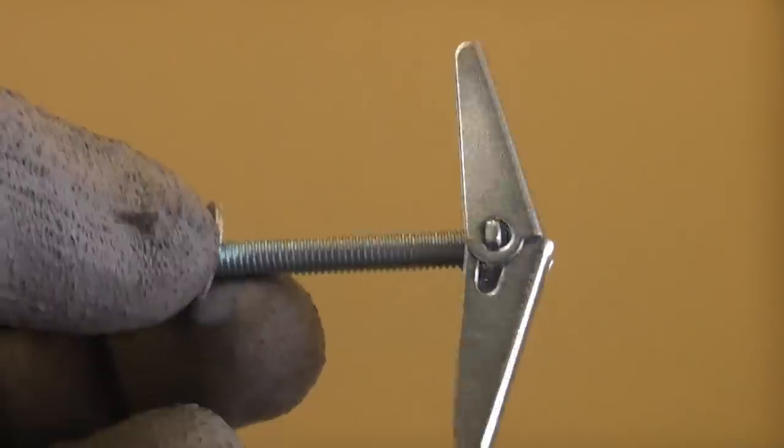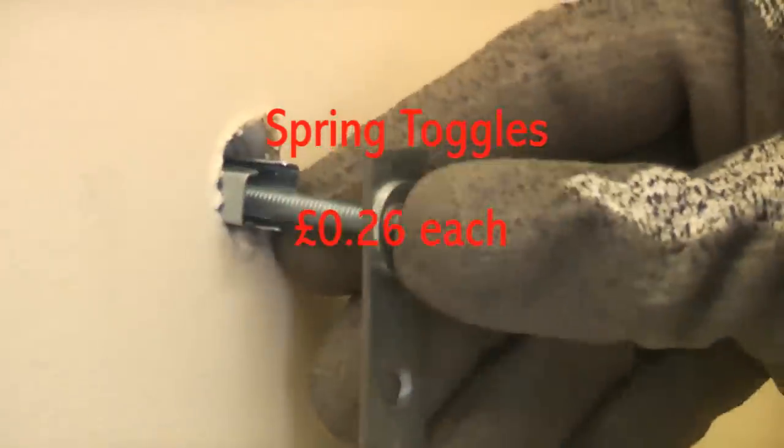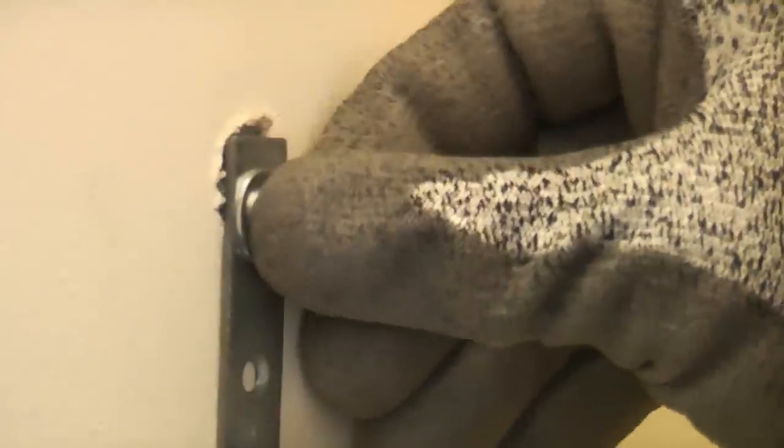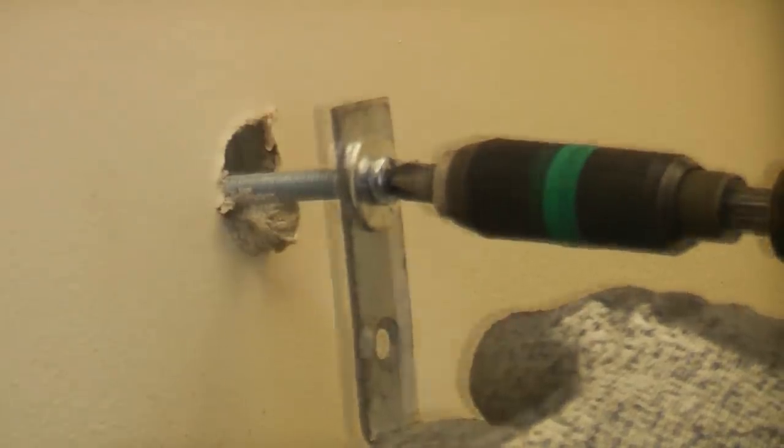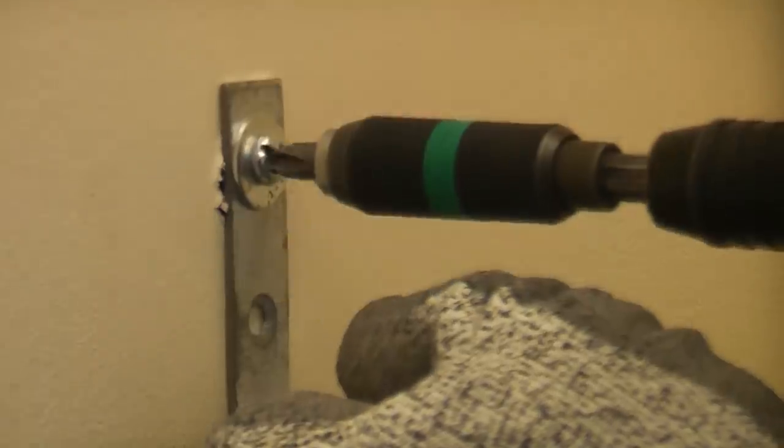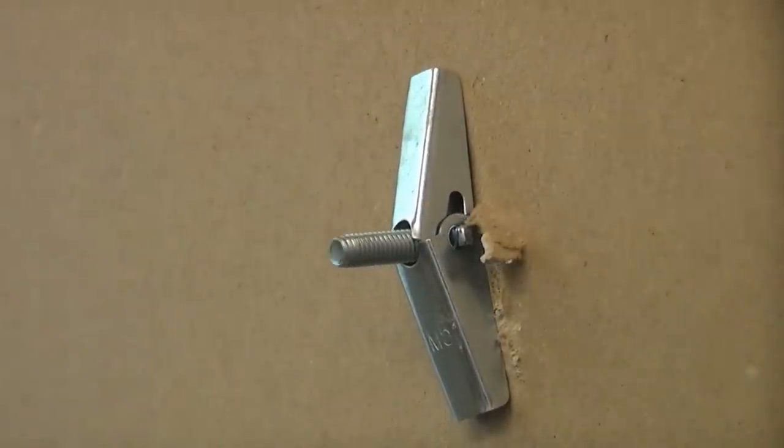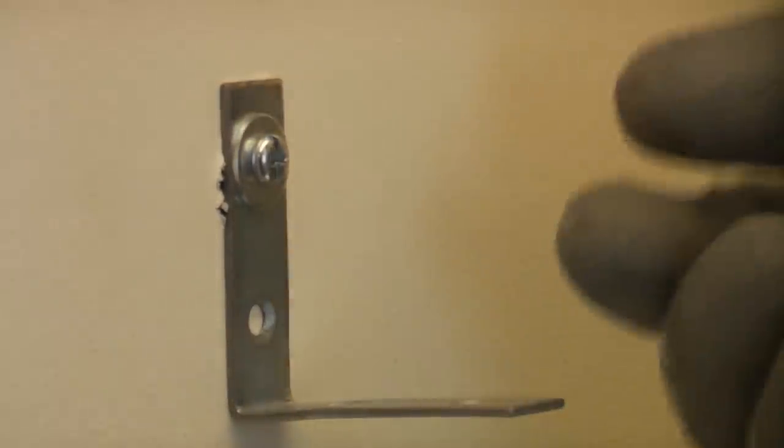Another common fixing for plasterboard is the spring toggle. You can see that I've made a hole already, so I'm just going to push the spring toggle through the hole. Sometimes you do actually have to pull this back in order to get the spring toggle to stop rotating. They give you a very good fixing, but they do have the disadvantage that if you undo them, you actually lose a fixing down the cavity. So spring toggles are another very useful fixing and they can hold considerable weight.